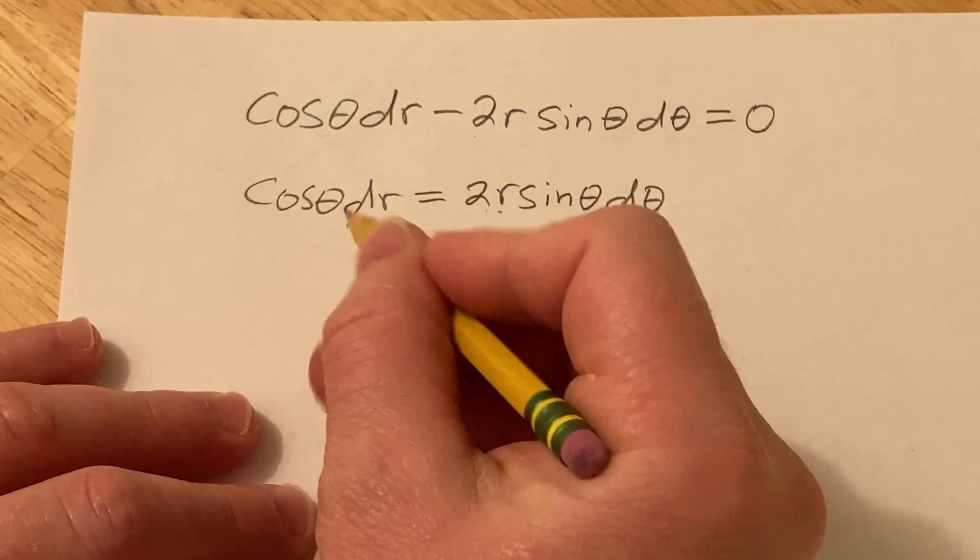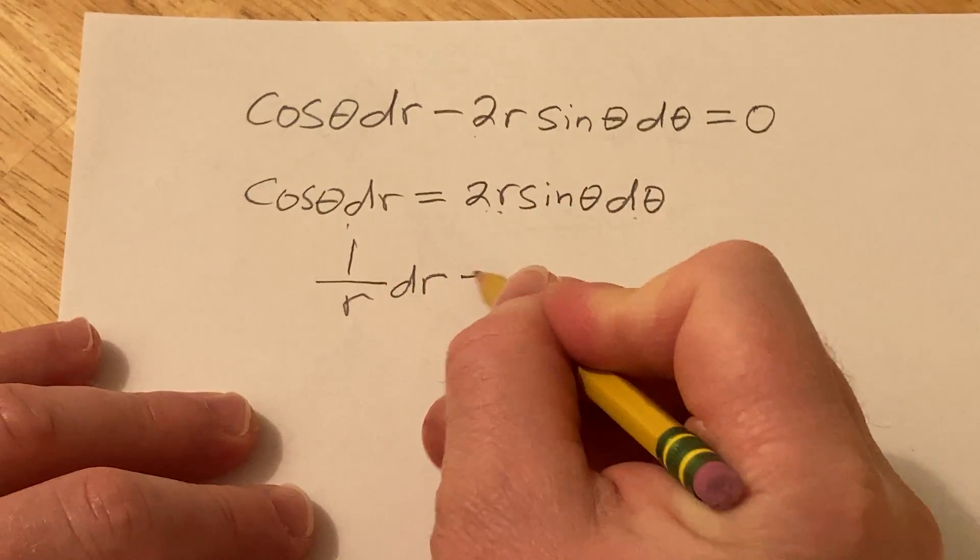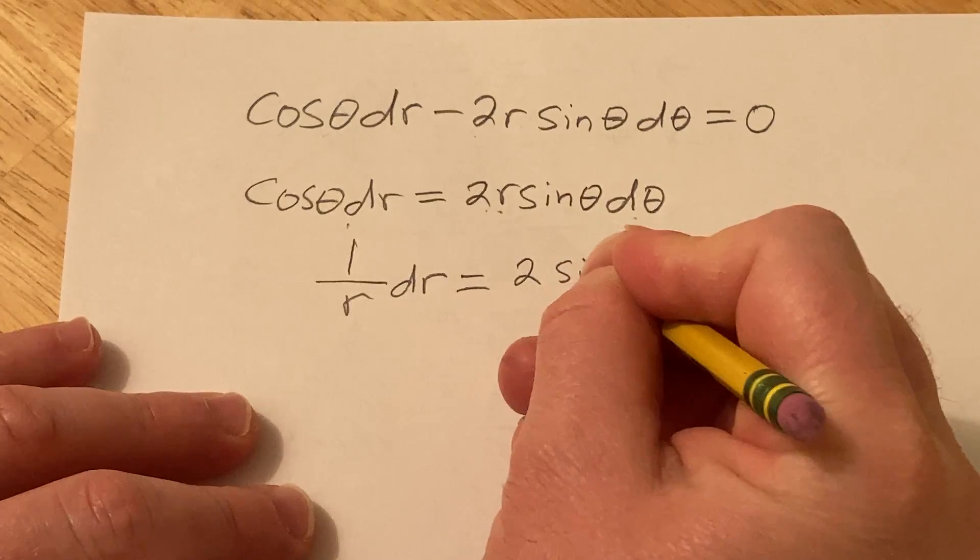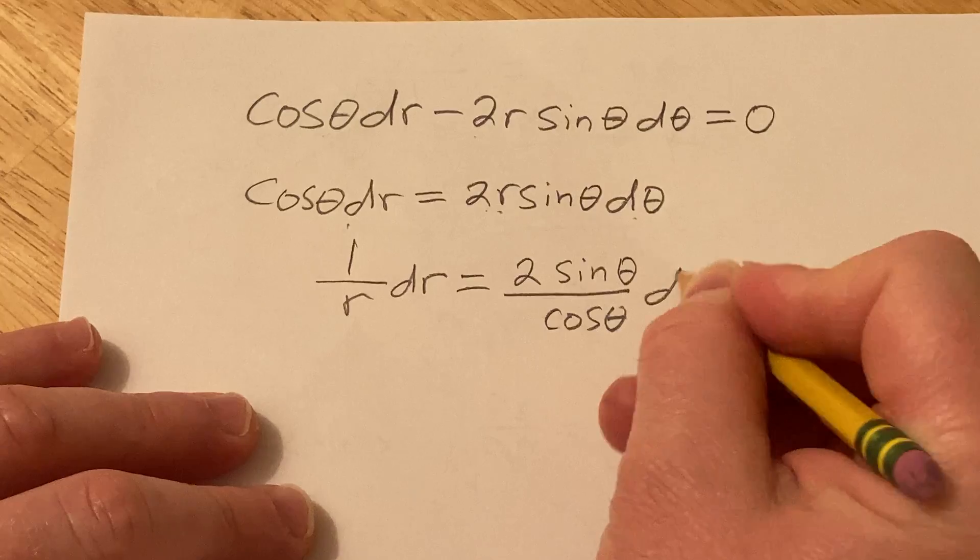I'm just going to divide by r and write this as 1 over r dr. Then divide by cosine so we get 2 sine theta over cosine theta d theta.